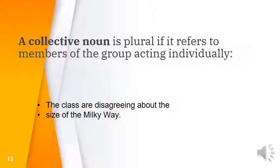If the group is doing a different action, we use the collective noun as plural. For example: 'The class is learning about the universe' — because everyone is learning the same lesson, the class acts as one, so we use 'is'. But 'The class are disagreeing about the size of the Milky Way' — here everyone has their own opinion, so the members act individually. We use 'are' and the verb in plural form.